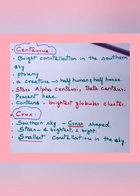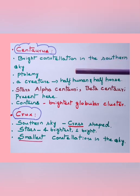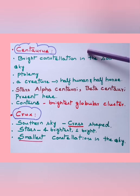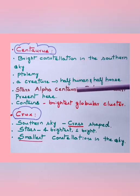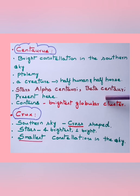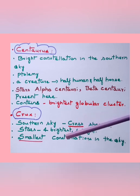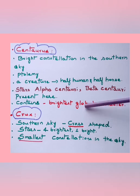Centaurus is a bright constellation in the southern sky, found by Ptolemy. It looks like a creature half human and half horse. The stars Alpha Centauri and Beta Centauri are present here, and the Centaurus constellation contains the brightest globular cluster. Crux is seen in the southern sky, is cross-shaped, has four brightest stars and one slightly bright star, and is the smallest constellation in the sky.